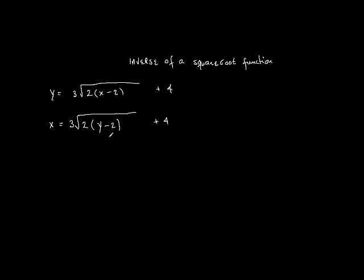What we do now is just isolate y. So I start by bringing this plus 4 over here to the other side. So what I get is x minus 4 equals 3 square root of 2y minus 2.